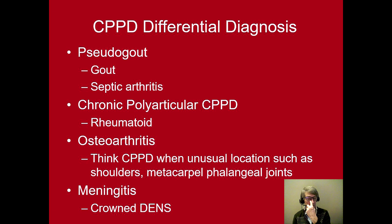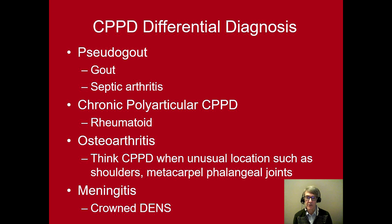Historically, we think of pseudogout as a sudden inflammatory arthritis typically in the knee or wrist, though other joints can be involved, and it can look like gout or septic arthritis. Patients can also have chronic polyarticular CPPD resembling rheumatoid arthritis with wrist and metacarpophalangeal joint involvement. Osteoarthritis occurring in unusual locations such as the shoulders, wrist, or metacarpophalangeal joints should prompt consideration of CPPD, and the crown dens presentation enters the differential for meningitis.